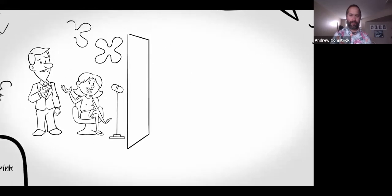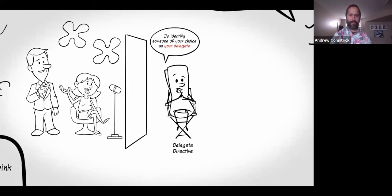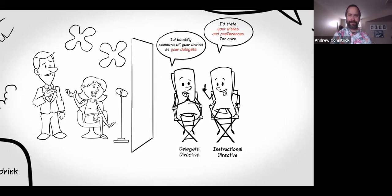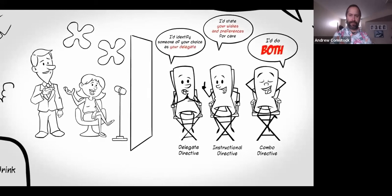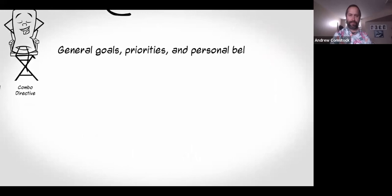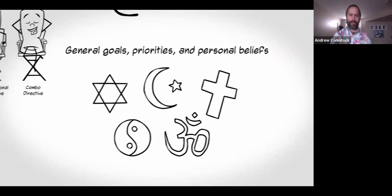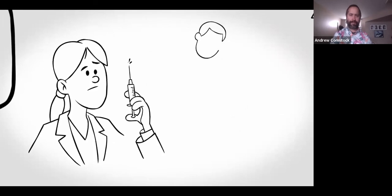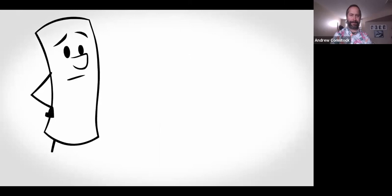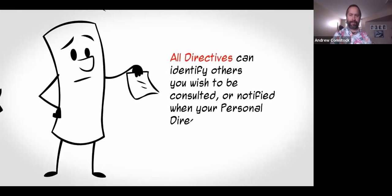There are three kinds of personal directives. A delegate directive identifies another person — someone you choose as your delegate — and assigns that person the responsibility to make care decisions for you when you're unable to. An instructional directive states your wishes and preferences for care but does not name a delegate. A combination delegate-instructional directive does both: it names your delegate and describes the type of care you wish to receive. Delegate or combination directives name your delegate and provide contact information, and directives of all types can identify others you wish to be consulted or notified when your personal directive comes into effect.